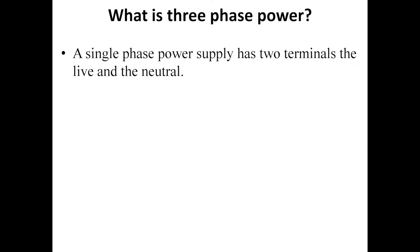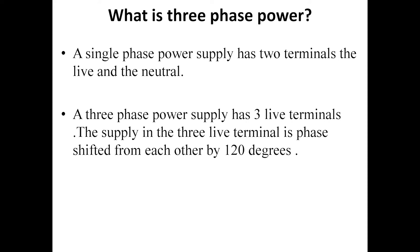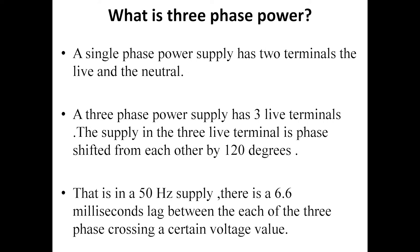A single phase power supply has two terminals—the live and the neutral. A three-phase power supply, on the other hand, has three live terminals. The supply in the three live terminals is phase-shifted from each other by 120 degrees. That is, in a 50 hertz supply, there is a 6.6 milliseconds lag between each of the three crossing a certain voltage value.